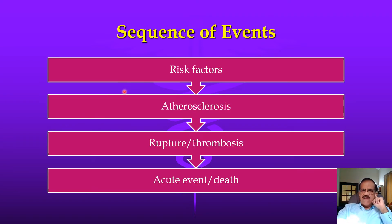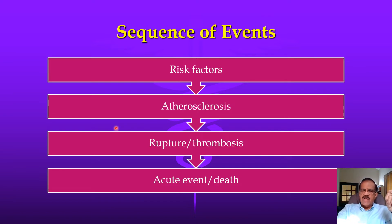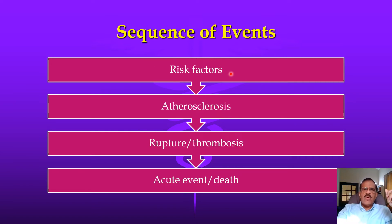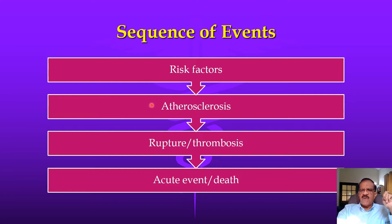Ischemic heart disease is essentially the consequence of atherosclerosis — the progressive narrowing of blood vessels. It is not just narrowing; ultimately something happens that leads to complete or near-complete occlusion. One may have risk factors and at this stage be expected to be asymptomatic. Then very slowly and progressively this develops into atherosclerosis, and again at this stage one is likely to be asymptomatic.